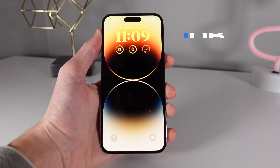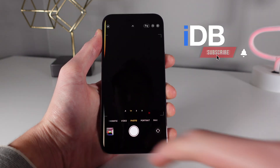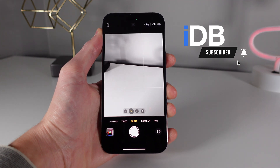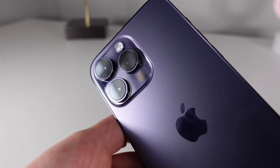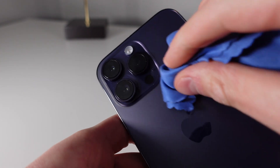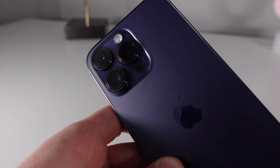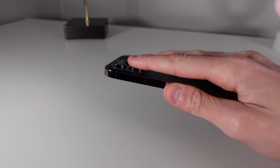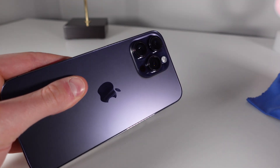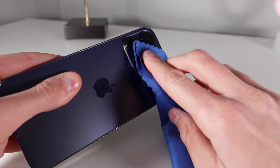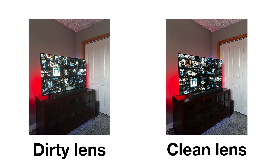Before we talk about editing our photos, I first want to give some suggestions for shooting your photos. The first one is to just make sure that your lenses are clean. It's quite common that people will rest their fingers on the lenses on the back of their iPhone, which can smudge them up and impact your final image. Take a look at these examples — one was taken with a clean lens and one with a dirty lens. As you can see, it makes a huge difference.